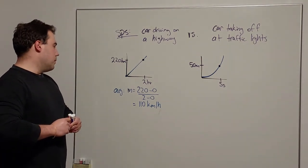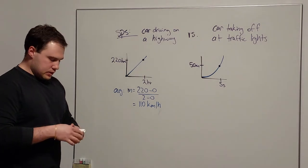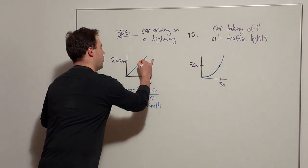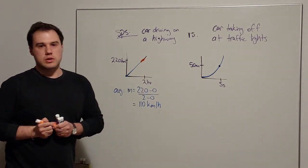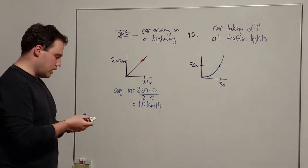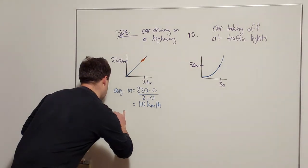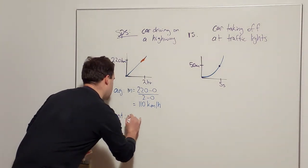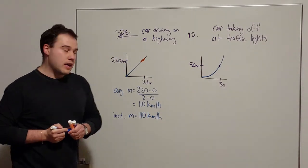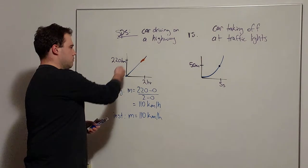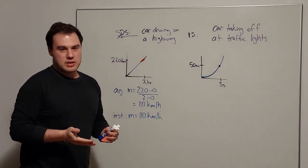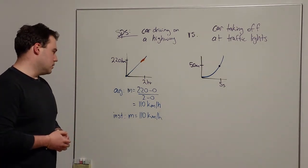The other question we could ask is about the instantaneous speed. So that would be at this specific point, what's the gradient kind of near that point there? And the instantaneous speed would also be 110 k's an hour because it's on a straight line with constant gradient, so at that particular point the gradient near that point is 110 k's an hour.